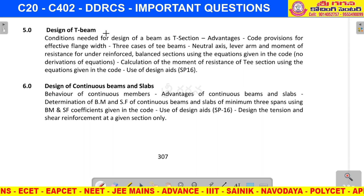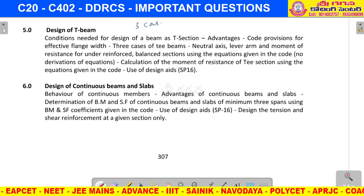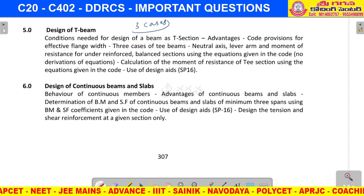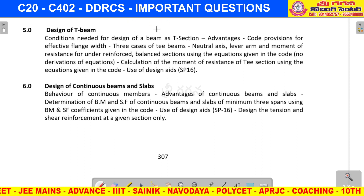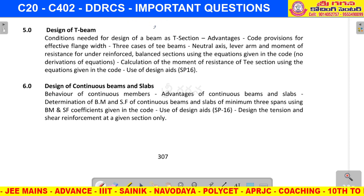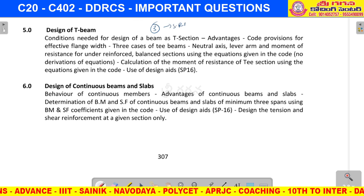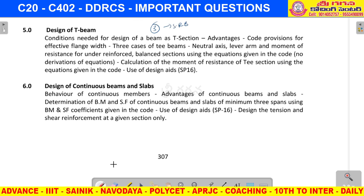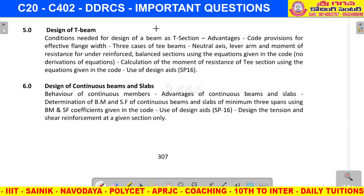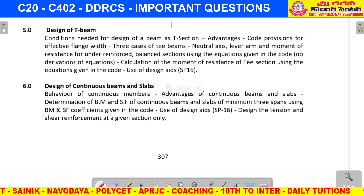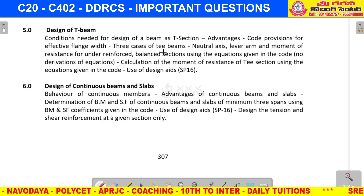Next, the fifth unit — design of T-beams — is very, very easy. T-beams have three cases and three types of problems. The first type follows the singly reinforced beam procedure from the third unit; the remaining two cases involve a slightly different procedure.